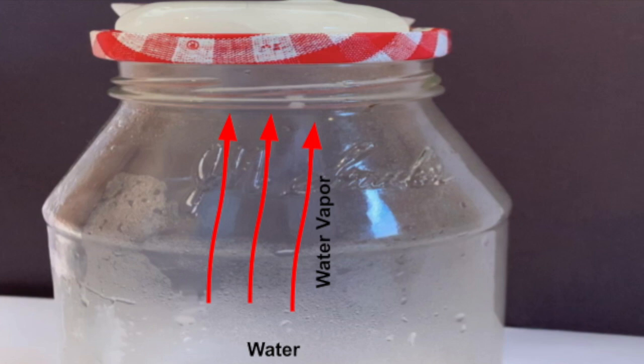The condensed water then needs something to cling on to in order for us to be able to see it. In this case, the hairspray is what the condensed water clung on to.